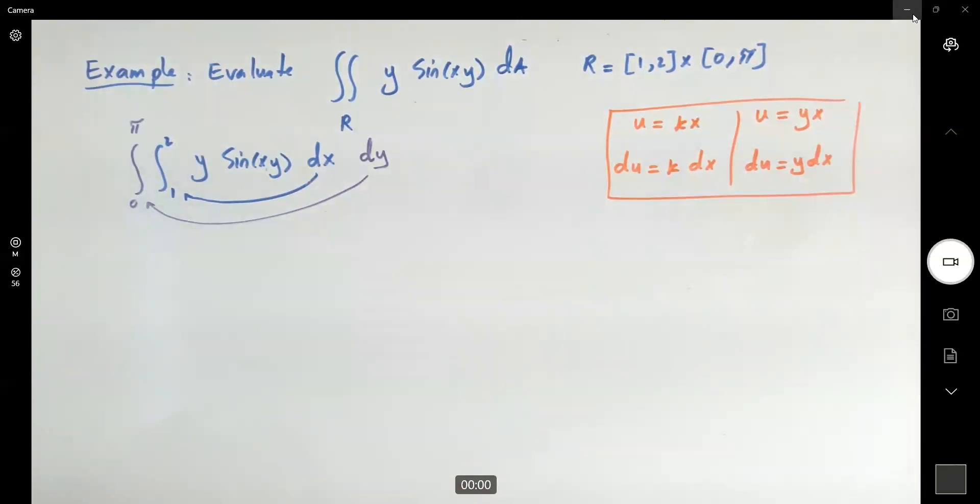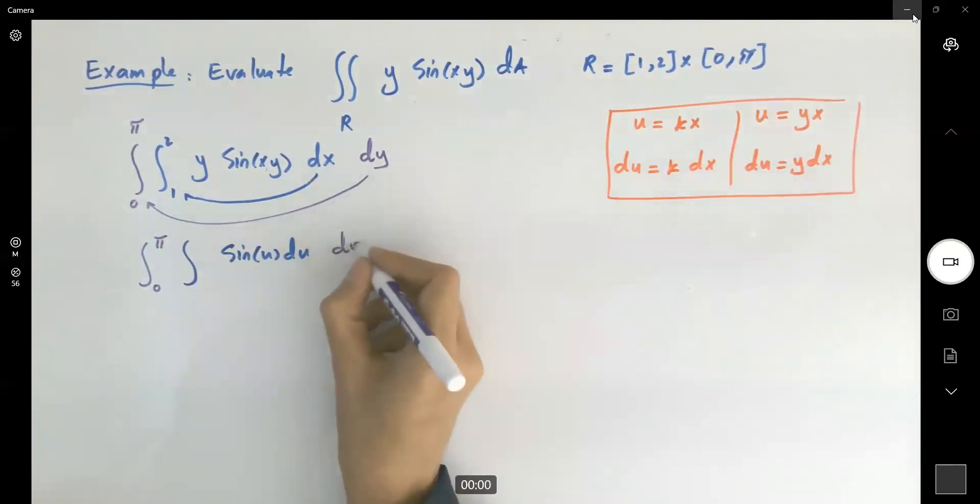So this time becomes integral 0 to pi. And here you have the integral of sine u, du, and then dy.